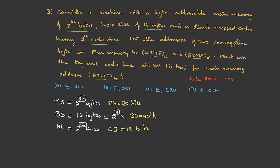Representing in a diagram: physical address is 20 bits. First 4 bits are block offset, next 12 bits are cache index, and the leftover bits are tag bits. Tag bits = 20 − 12 − 4 = 4 bits.